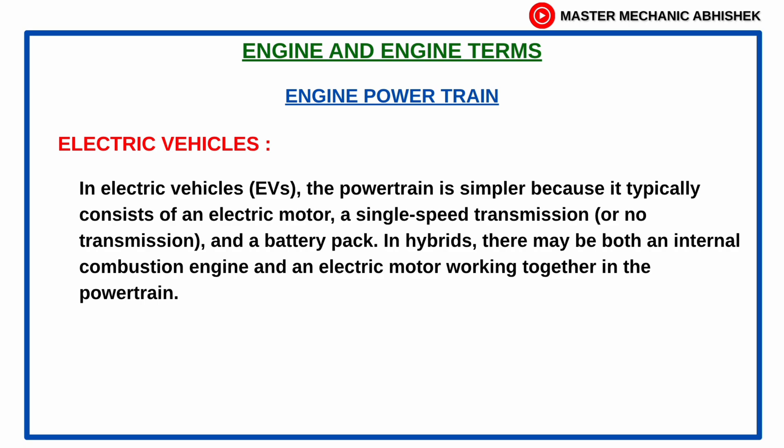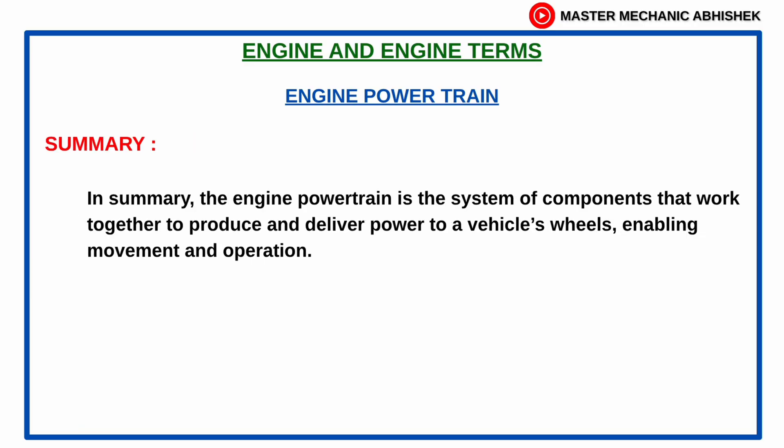In electric vehicles (EVs), the powertrain is simpler because it typically consists of an electric motor, a single-speed transmission or no transmission, and a battery pack. In hybrids, there may be both an internal combustion engine and an electric motor working together in the powertrain.